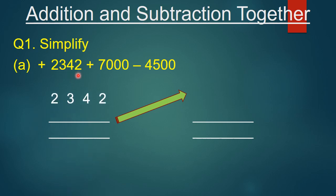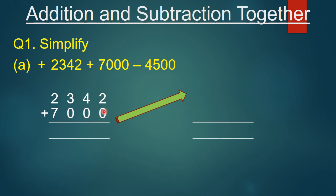We write 2342 on top, then we write 7000 below it. Now we will add the two numbers. Starting from the ones place: 2 plus 0 is 2, write 2. Tens place: 4 plus 0 is 4, write 4. Hundreds place: 3 plus 0 is 3, write 3. Thousands place: 2 plus 7 is 9, write 9.